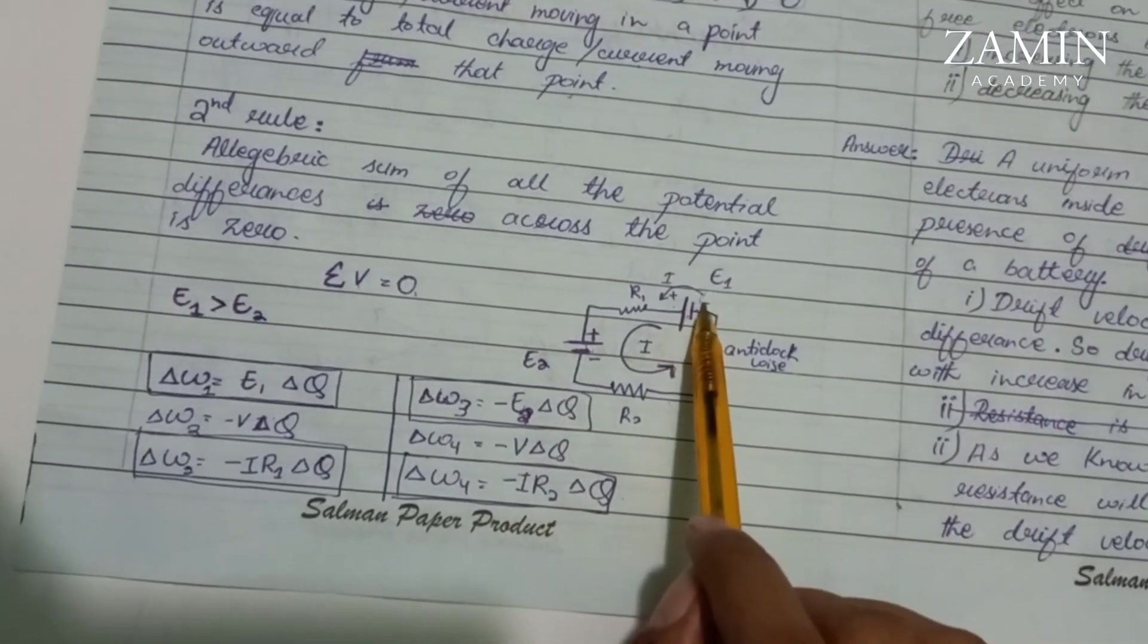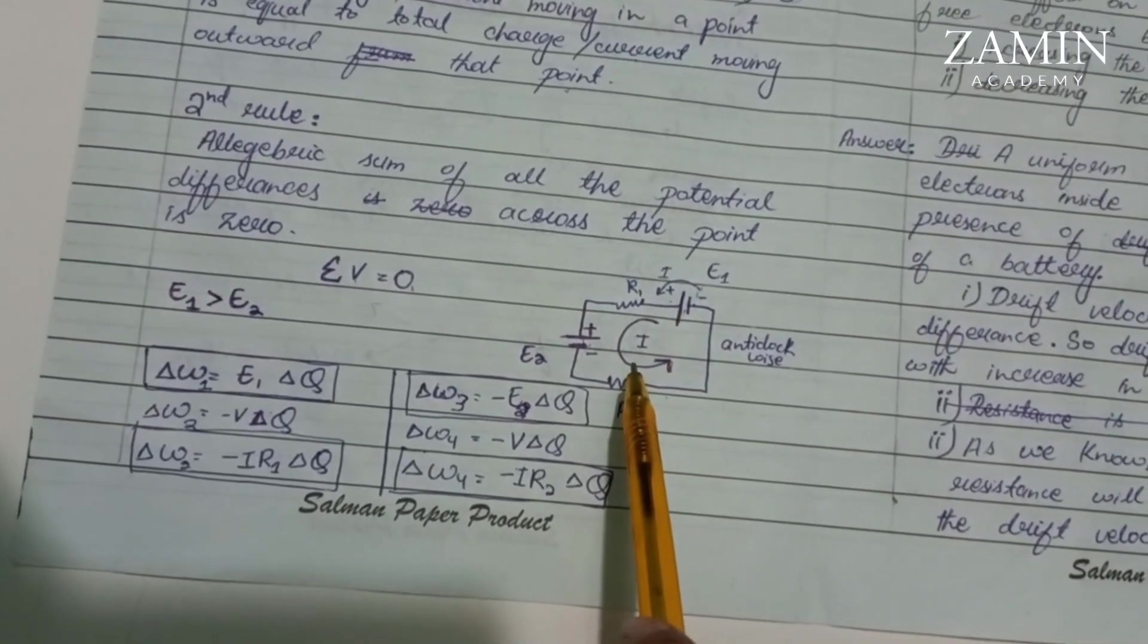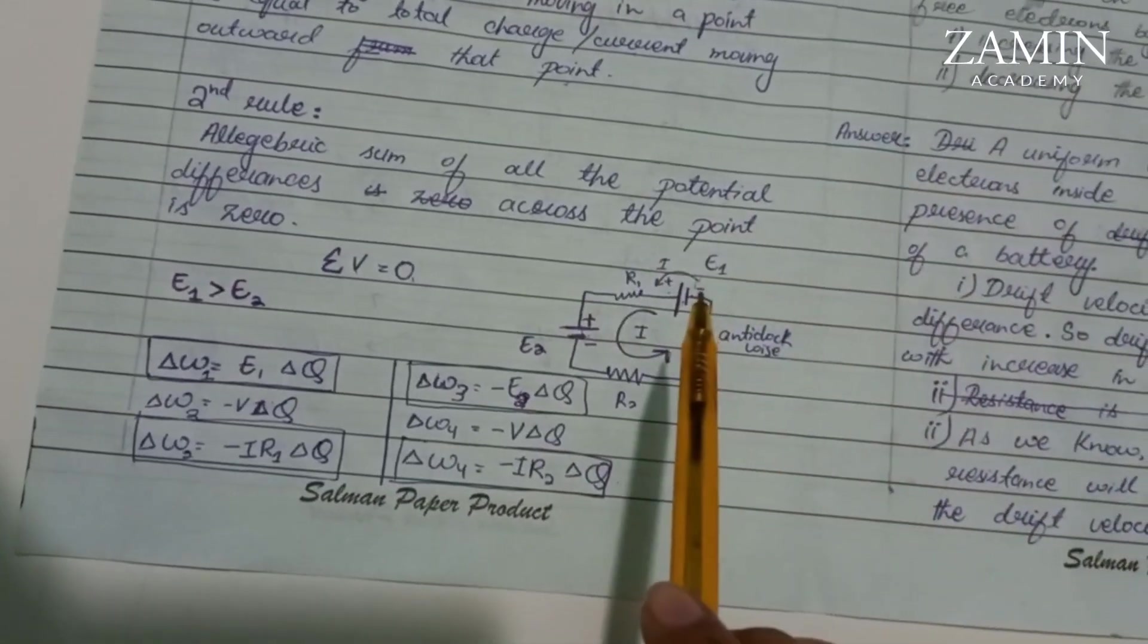When E1 is greater than E2, the current will flow negative to positive. The current will be anti-clockwise.